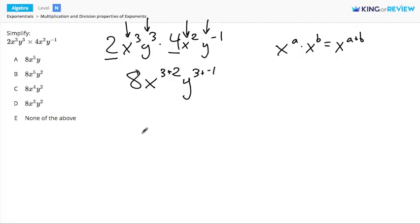Now all that's left to do is to simplify the exponents. 3 plus 2 gives us 5, and 3 plus negative 1 gives us 2. So our answer is 8 times x to the fifth times y squared, or answer choice b. And that's it. Thanks for watching.